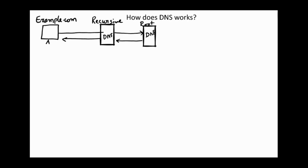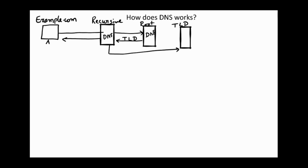The root DNS will then reply back to the recursive DNS server with TLD information — it informs the recursive DNS server about the Top Level Domain. There are 13 types of top-level domains. The recursive DNS server will then send a query to the TLD server.